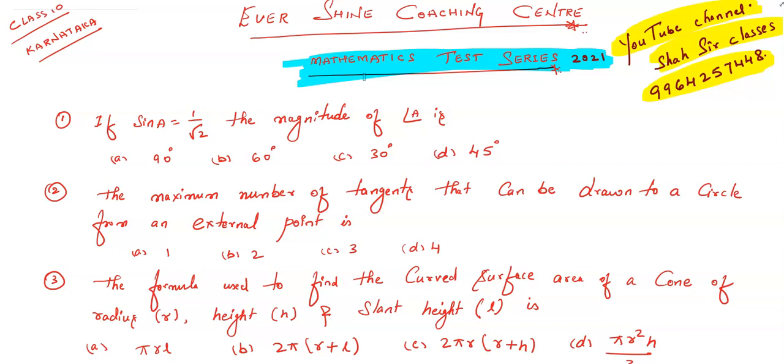Question number one: if sin a equals 1 by root 2, the magnitude of angle a is: option a) 90 degree, option b) 60 degree, option c) 30 degree, option d) 45 degree.